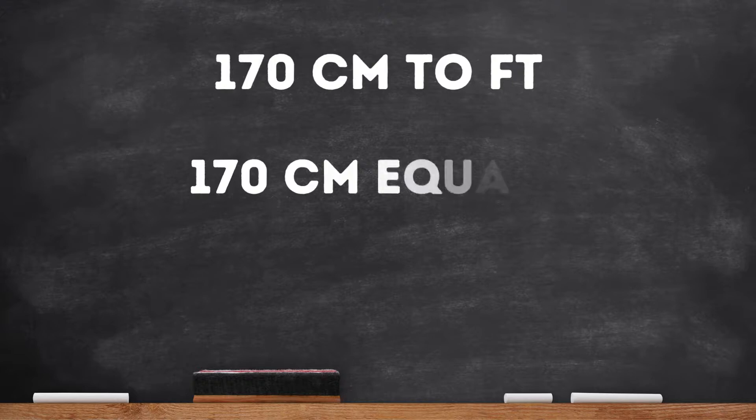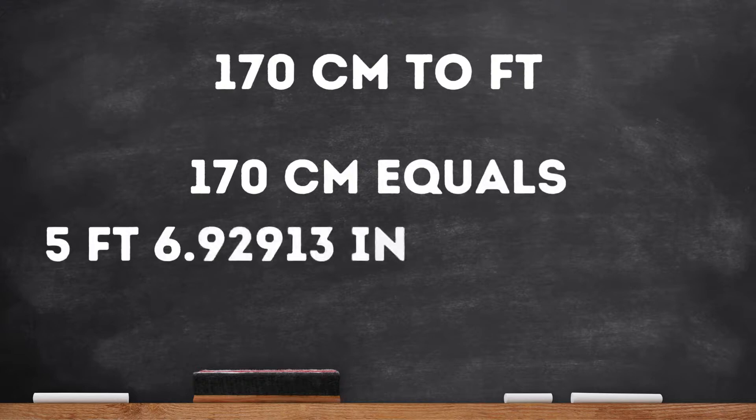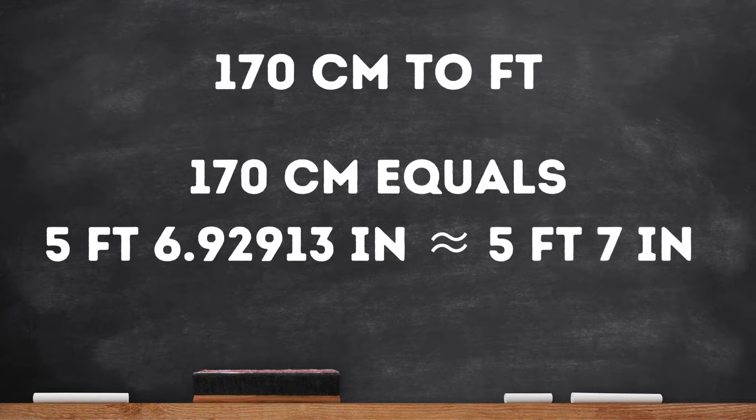After multiplying we find that 170 centimeters is equal to 5 feet and 6.92913 inches. Or rounding up, 170 centimeters is approximately equal to 5 feet 7 inches.